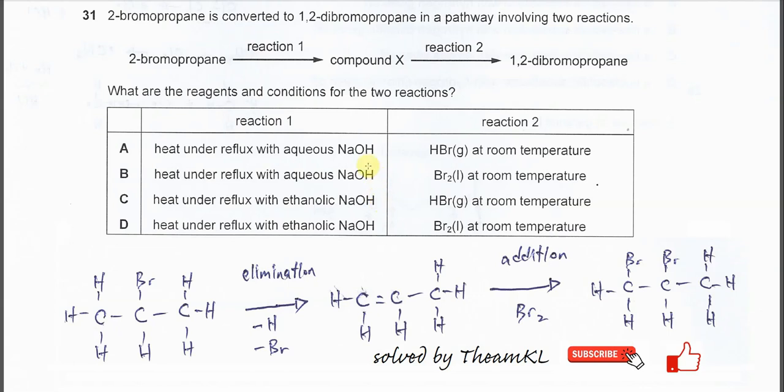Question 31. 2-bromopropane is converted to 1,2-dibromopropane in a pathway involving two reactions. So 2-bromopropane forms compound X first, then compound X will undergo reaction 2 to form 1,2-dibromopropane.